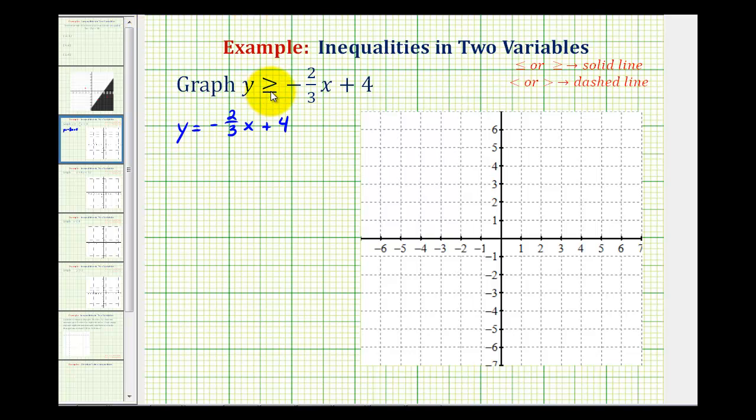Based upon the given inequality symbol, the line is either going to be dashed or solid. If we have less than or equal to or greater than or equal to, we're going to graph a solid line. Because of the equal part, the line is going to be part of the solution.